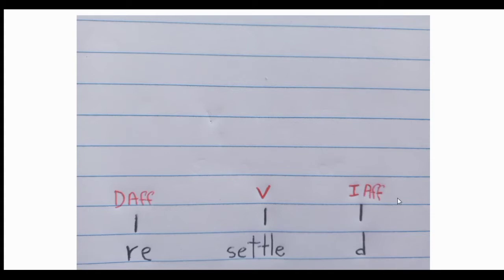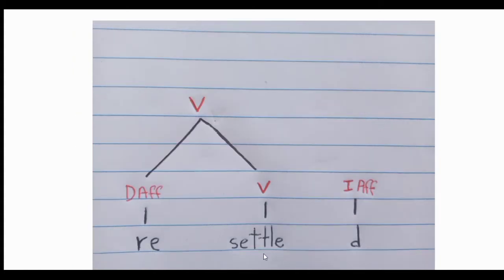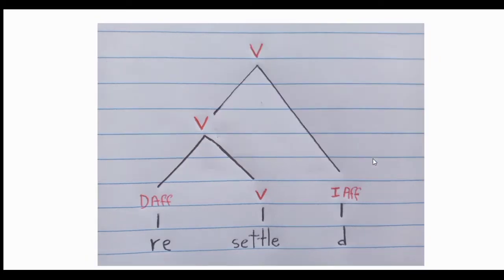The third step is to link each morpheme. In this case we are going to link the prefix 're' with the verb 'settle', and then you draw the lines and you have the verb 'resettle'. Then we link that verb with the inflectional affix '-ed', and we will have the complete word 'resettled'. You can see that 'settle' is a verb, 'resettle' is a verb, and 'resettled' is also a verb.